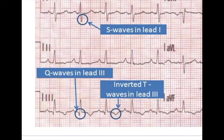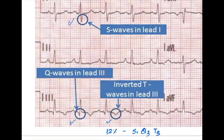In almost 12% of individuals there is a classical pattern called the S1Q3T3 pattern. This is the presence of a deep S wave in lead 1, a deep Q wave in lead 3, and T wave inversion in lead 3.